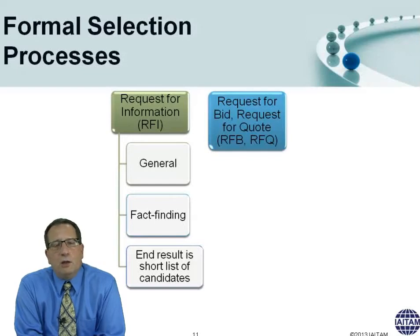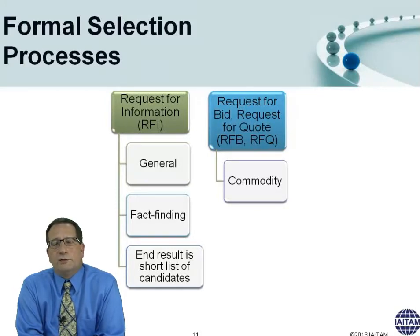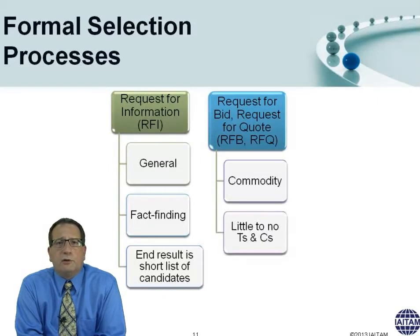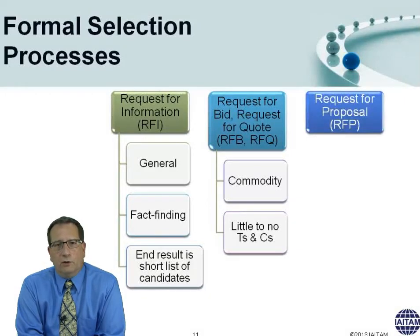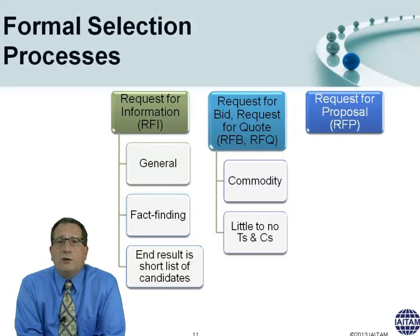There's the request for bid or request for quote — they're both the same thing, and we're talking about purchasing a commodity item at the cheapest price. This is more applicable on the hardware side than software. For example, you want to purchase a thousand flat screen monitors — you're looking at best price, with very little in terms and conditions. Then there's the RFP — the request for proposal — which is very detailed, covering requests for products and services, and can be a very painstaking process to answer.